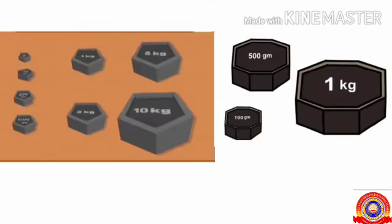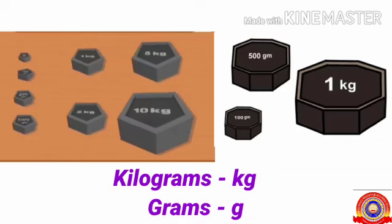Children, look here. These are called standard weights approved by the government. We measure the weight of an object or our own weight in kilograms or grams. Kilograms are denoted by kg and grams are denoted by g.